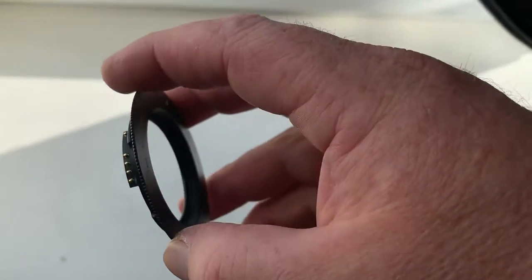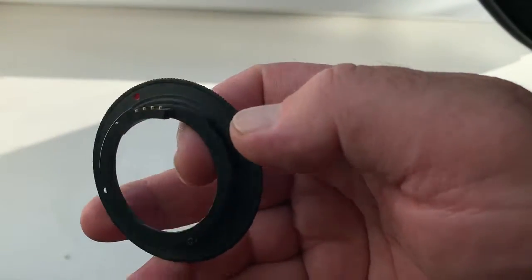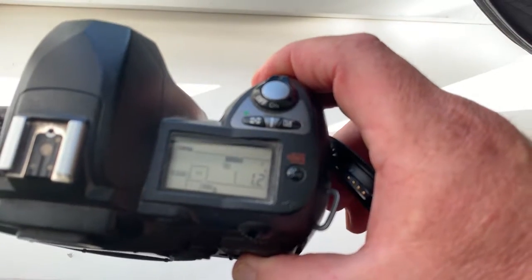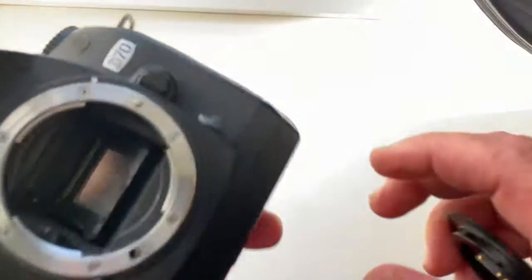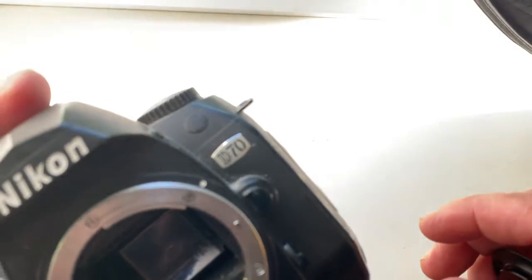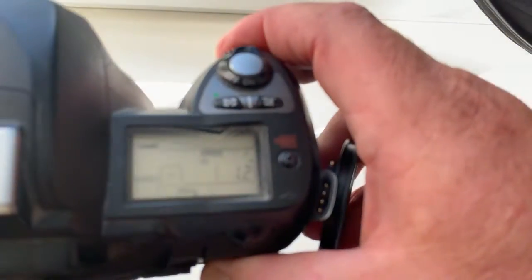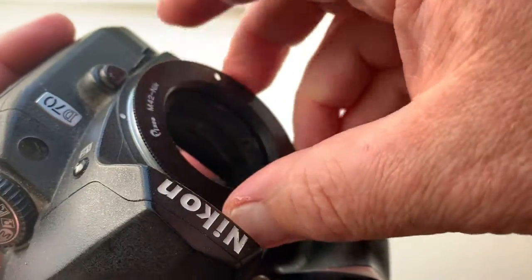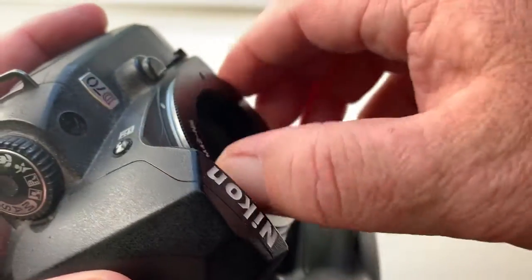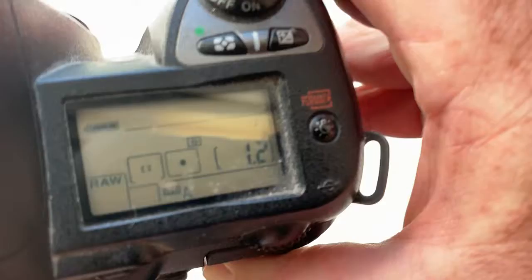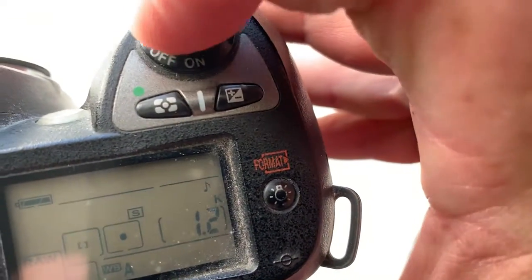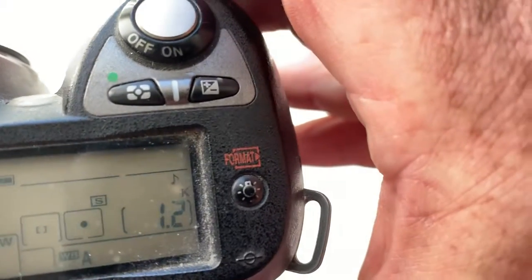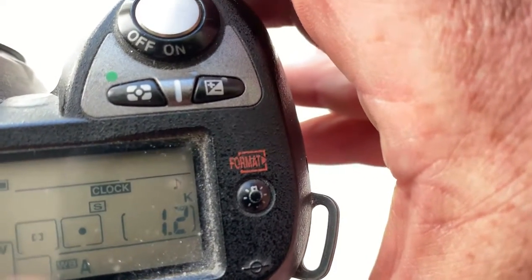Look, this is the same adapter as you have, and this is my old Nikon D70 camera. Look. See the FEE error? This is a blocked Dandelion chip.